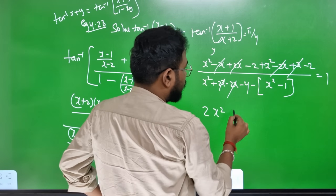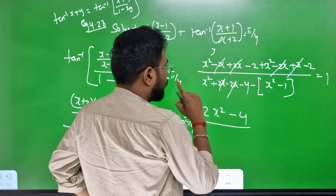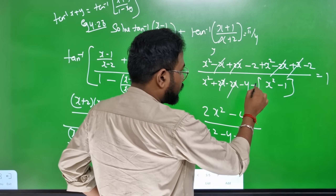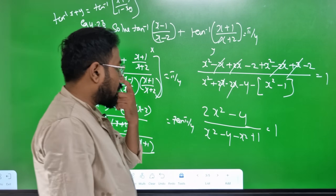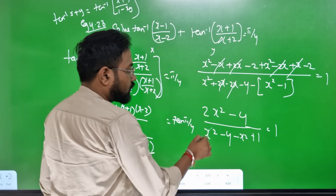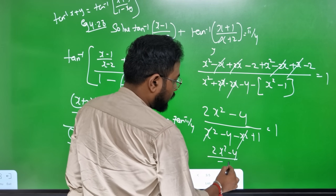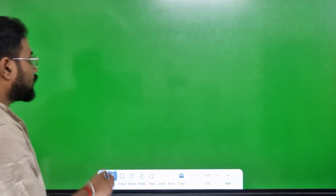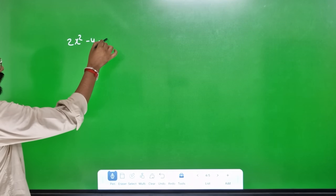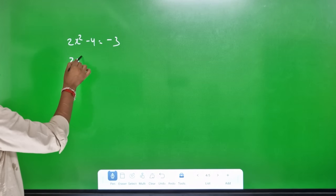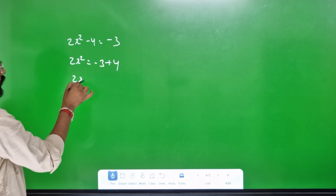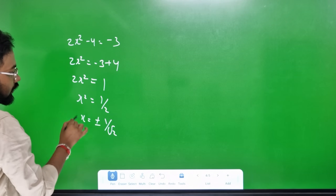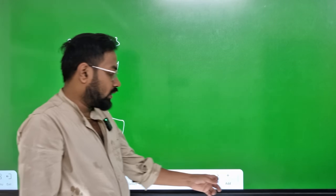2x² minus 2 minus 4. Minus 3 equals 1. 2x² minus 4 equals minus 3, minus 3 equals 1 times (2x² minus 3 plus 4). So 2x² equals 1, x² equals 1 by 2. x equals plus or minus 1 by root 2. This is the answer.